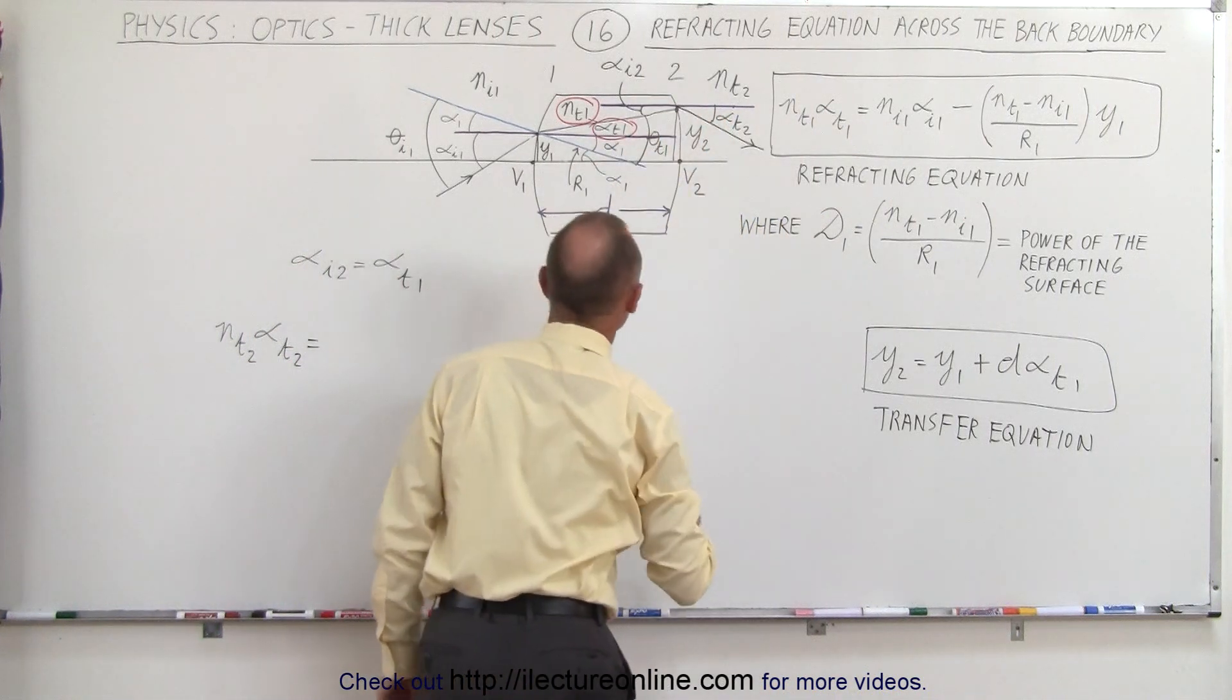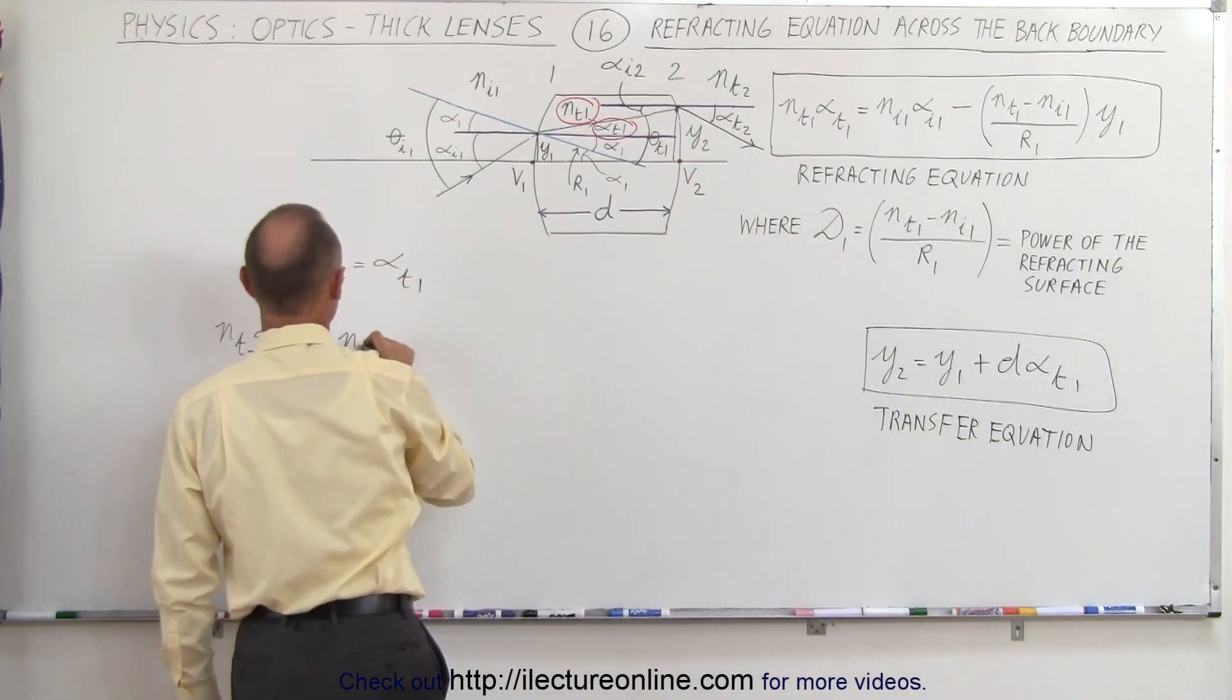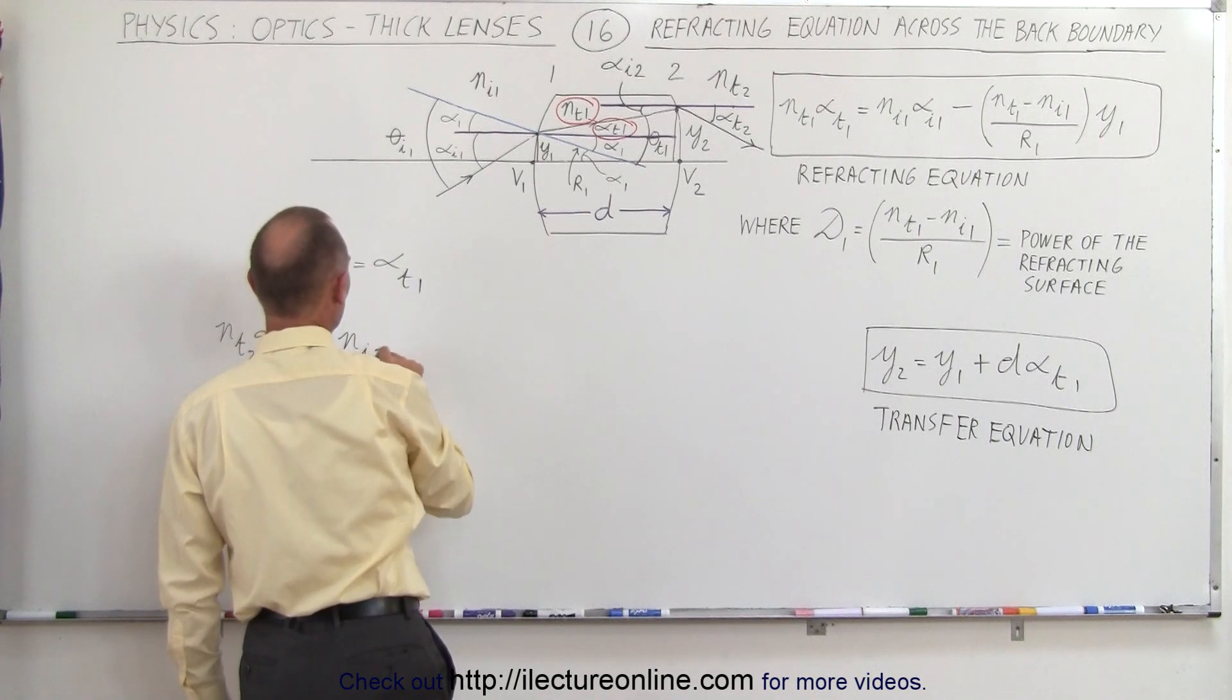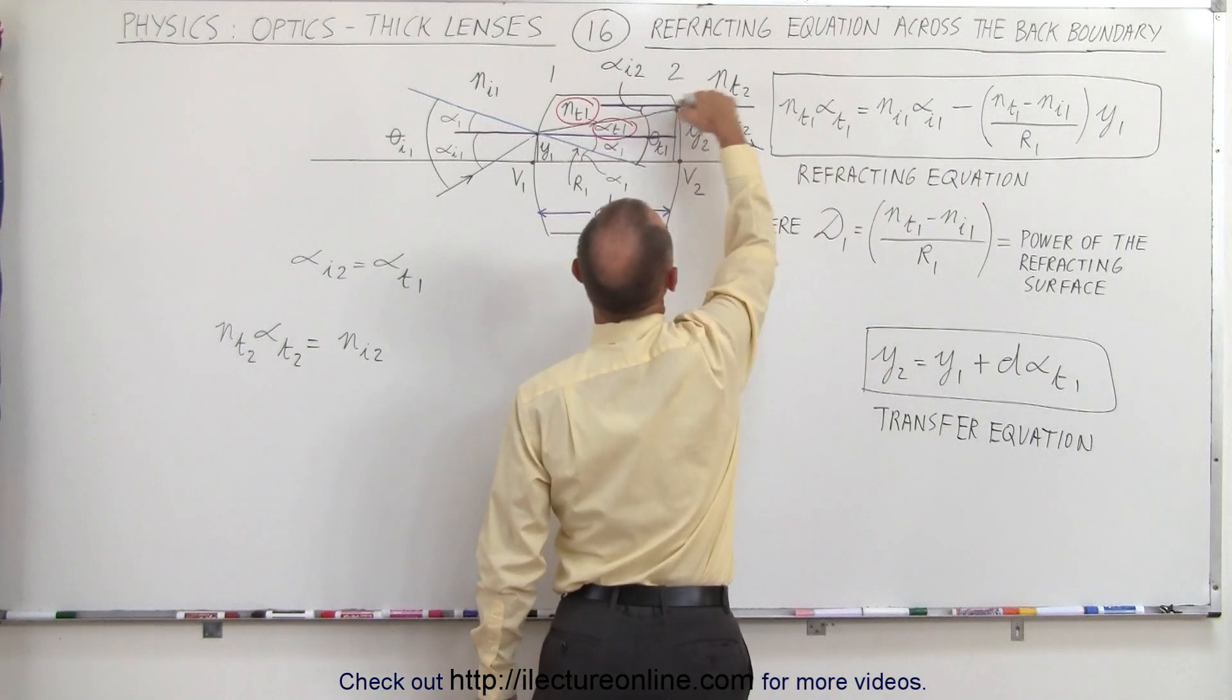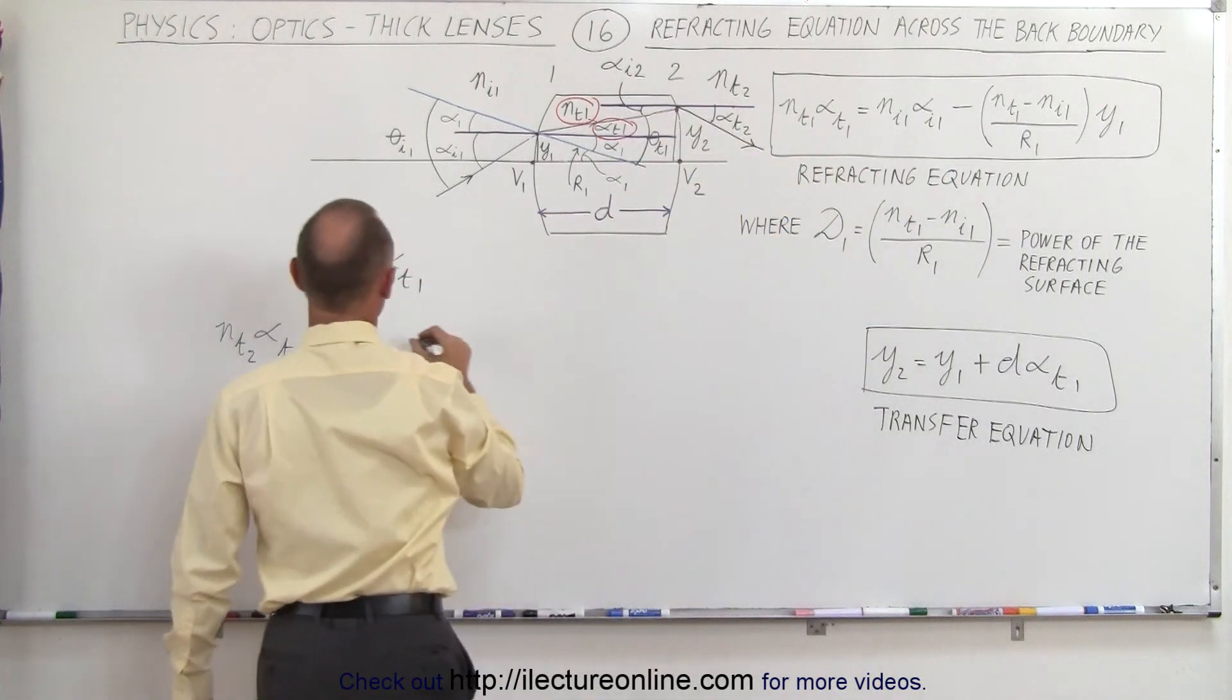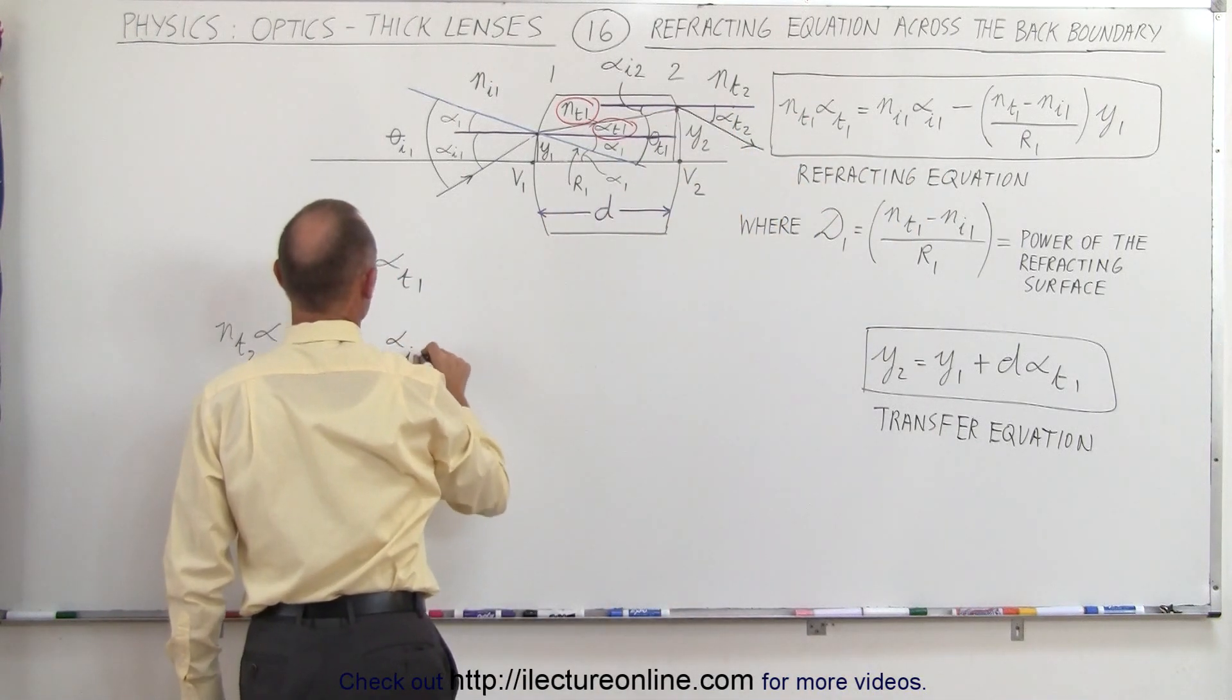which is the index of refraction inside the lens. This is N, that would be I2 because it's relative to the second boundary, times the angle of the approach ray, the incident ray, that would be alpha I2.